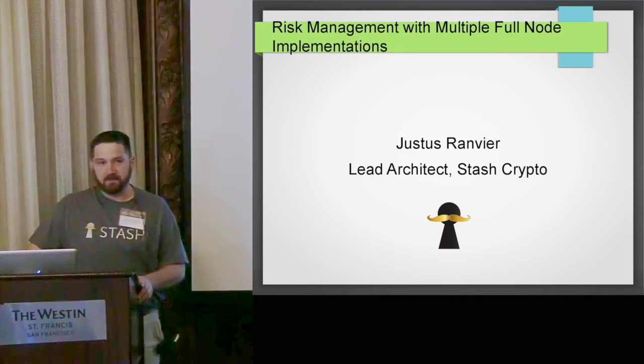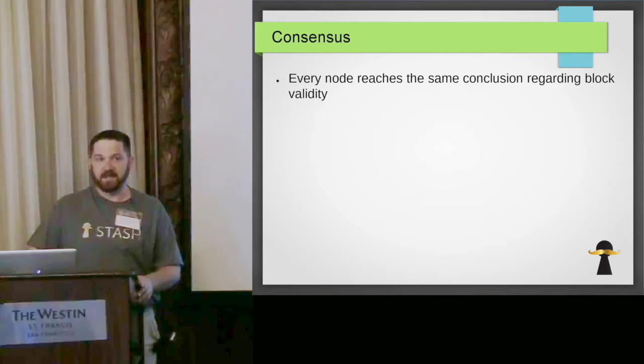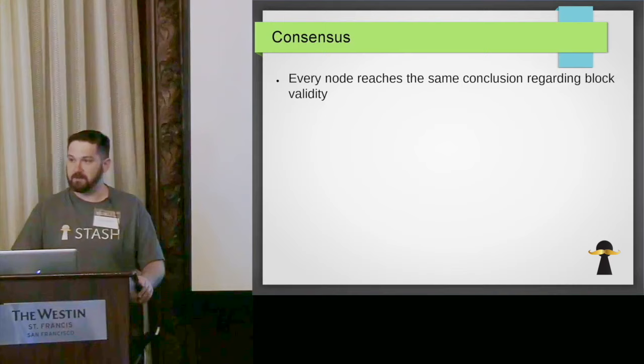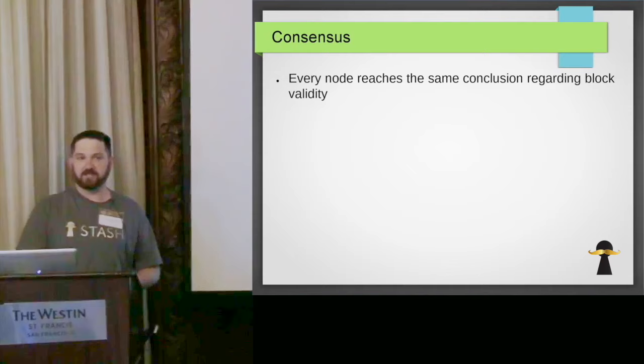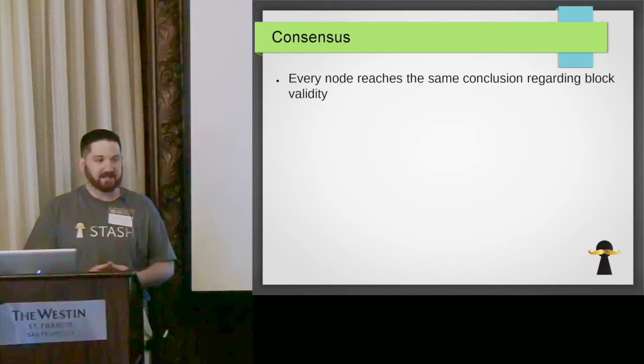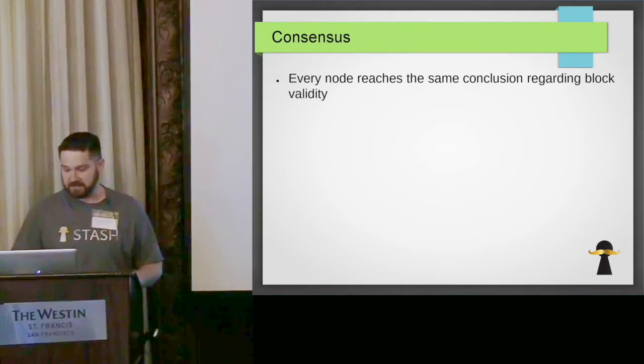The basic problem with Bitcoin is that we're trying to build a new form of money, which is a ledger that everybody agrees on. So when you're using software to build a ledger, you have this technical problem where every piece of software that is part of this network has to come to the exact same agreement about the state of the ledger — specifically whether a block is valid or not. We have blocks, they contain transactions, and the transactions have an embedded scripting language. Every implementation must come to the exact same conclusion regarding rejecting invalid transactions and invalid blocks and accepting the valid ones.